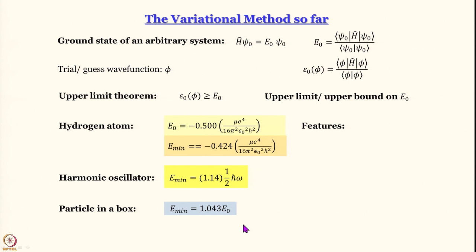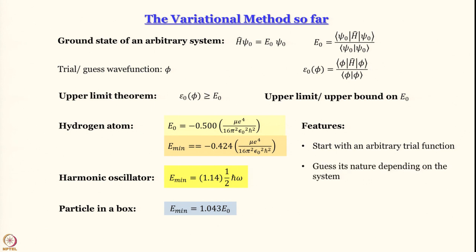The strategy we have seen so far is: we start with an arbitrary trial function — arbitrary in the sense that we do not know whether it is the correct one, but there is a method in the madness. For particle in a box and the simple harmonic oscillator, we realized the functions have to be symmetric with respect to the midpoint and become zero at the boundaries. So I am not going to use something like e to the power alpha x squared — that is not even a good wave function. When I say arbitrary trial function, it is arbitrary within a certain limit; you still have to think before deciding which trial function to use.